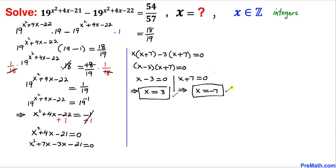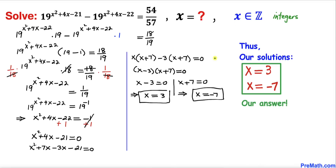After all these steps and manipulation, our solutions turn out to be x equals 3 and x equals negative 7, and that is our final answer. Thanks for watching and please don't forget to subscribe to my channel for more exciting videos. Bye!